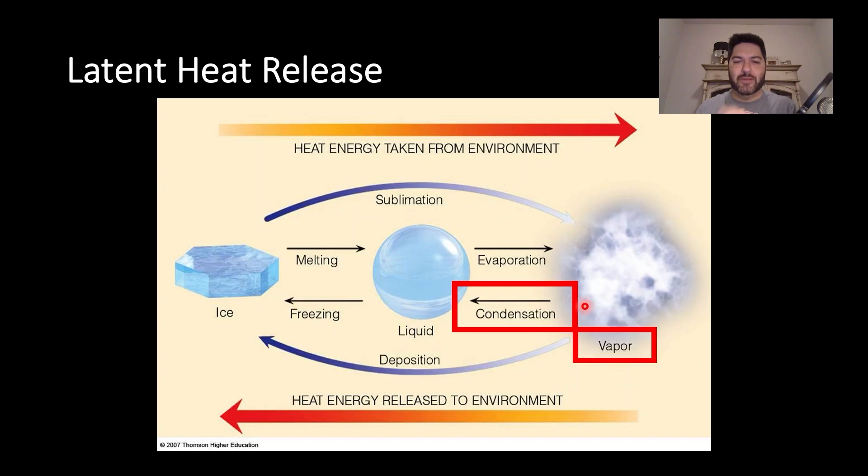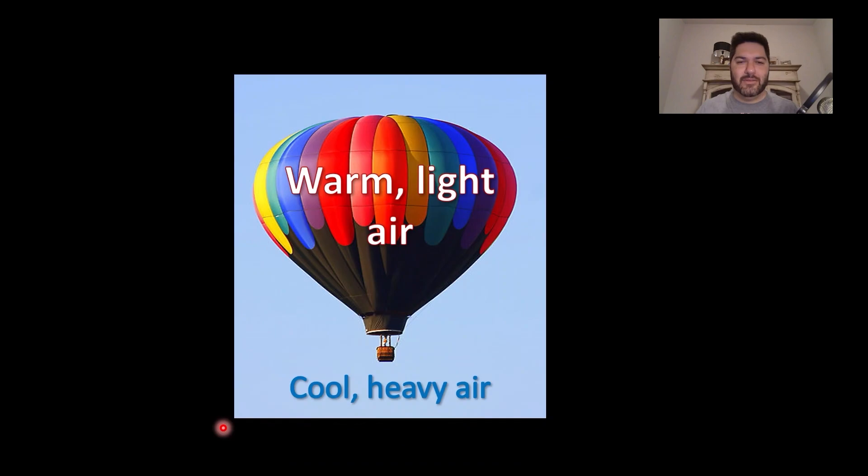If you're moving from vapor to liquid, you're moving essentially from right to left here in this particular image. And that means that heat has been released to the environment, which means that your hot air balloon is warmer than its surroundings. Here's the idea: warm, light air in the hot air balloon. Think just after condensation occurs as you're lifting a parcel of air. And around it, you have the environmental air, which is relatively cool and heavy.